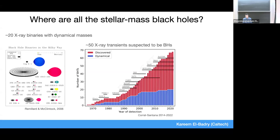In addition to those ~20 dynamically confirmed black holes, there are another 50 or so we think are probably black holes based on their X-ray properties — same kind of outbursts and spectra — but where we haven't been able to make dynamical mass measurements, basically because they're too far away, very faint in the optical, and there's a lot of dust in between. The number of systems known has been increasing roughly linearly for 50 years, but the number of dynamically confirmed systems has plateaued in the last 20 years because most new systems are far away behind a lot of dust.